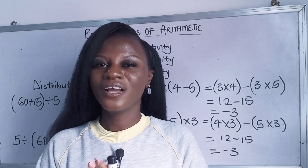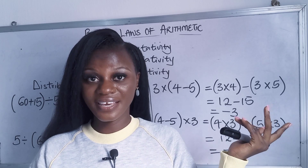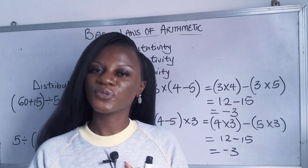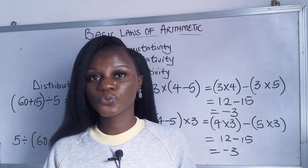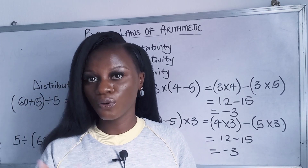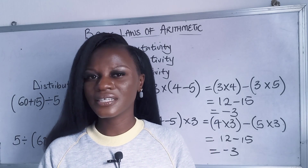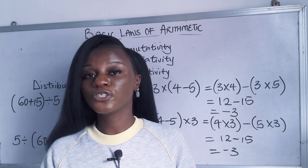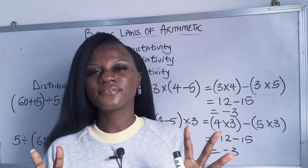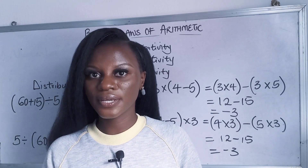So I hope you were able to get something about the basic laws of arithmetic. We have the basic operations — addition, subtraction, multiplication, and division — and then the laws: commutativity, associativity, and distributivity. Note that there are more laws of arithmetic such as identity and inverse, but for now these three are the basic ones you need to know. Know their differences so that when you see questions asking you to identify which law is which, you'll know.